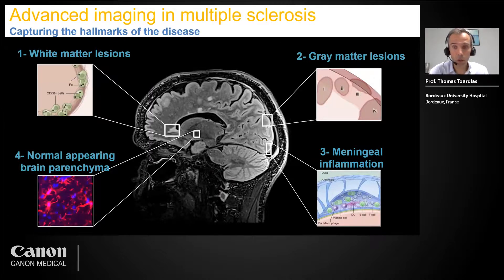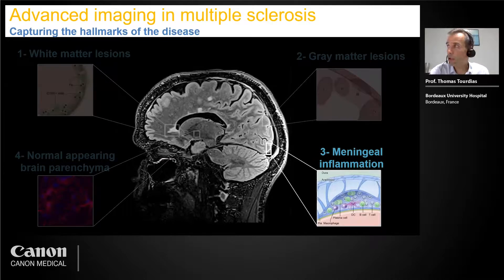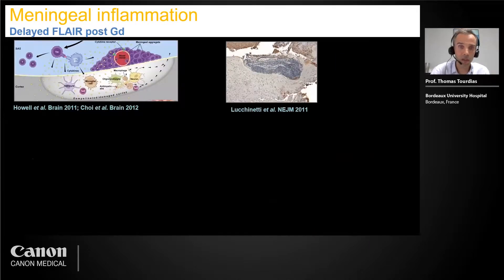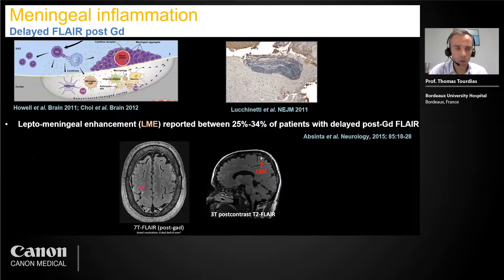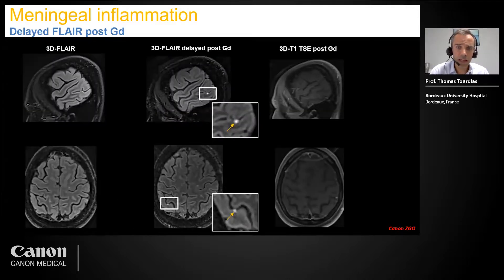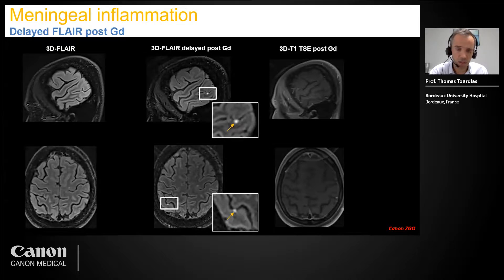A quick word on meningeal inflammation: it has been described in post-mortem brain of MS patients. These are follicles made of aggregates of B and T lymphocytes that secrete cytokines and alter the underlying cortex. It has been described that when you perform a FLAIR several minutes after injection — at least 10 minutes — you can have focal enhancement supposed to represent these follicles. We have identified this kind of focal leptomeningeal enhancement in our experience only with this delayed FLAIR post-gadolinium, but probably more work is needed to understand the meaning of this pattern.